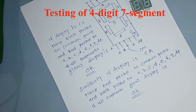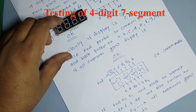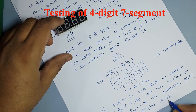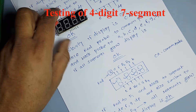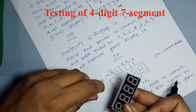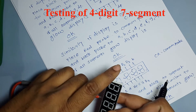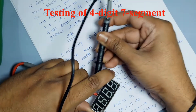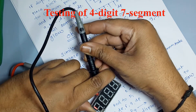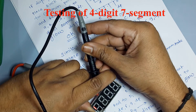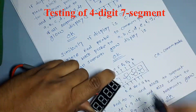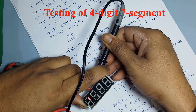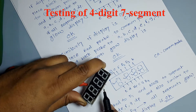4-digit 7-segment display ha electronic device aahe. Yacha upyog 4-digit number display karnyasaathi hoto, jase ki Digital Clock, Electronic Meter, Basic Calculator. Ha display common anode kiva common cathode prakaarcha asto.